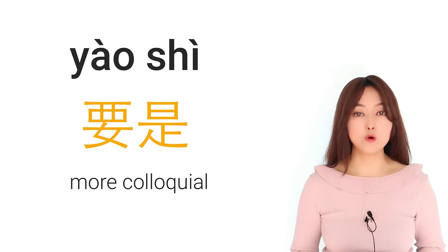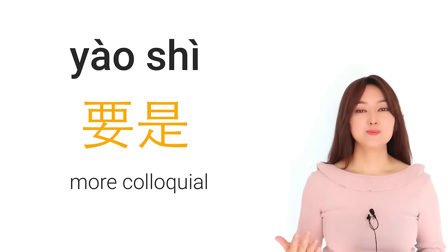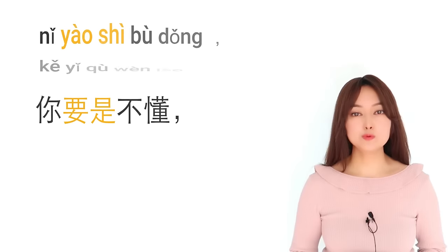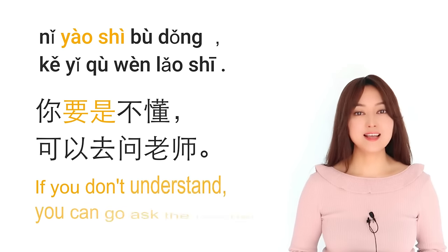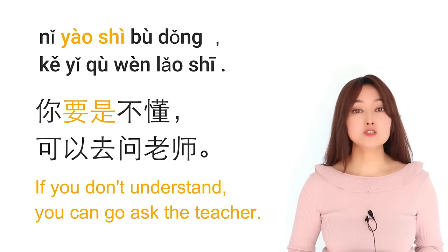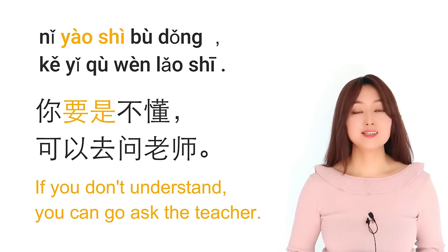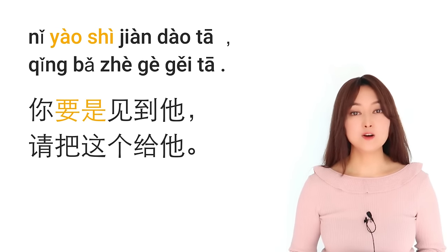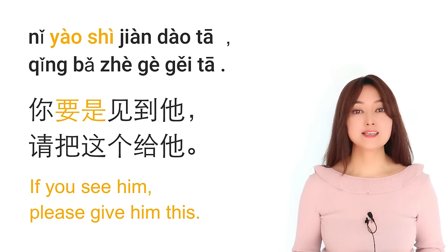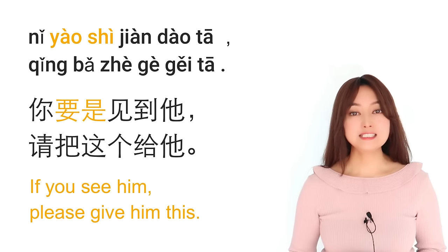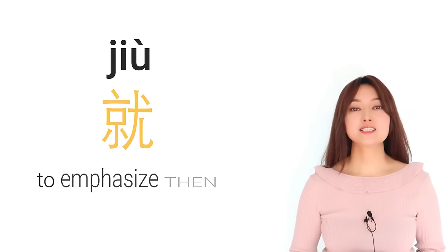Another way to say 'if' is 要是. Compared with 如果, 要是 is more colloquial. For example: 你要是不懂，可以去问老师 — if you don't understand, you can go ask the teacher. Another example: 你要是见到他，请把这个给他 — if you see him, please give him this.